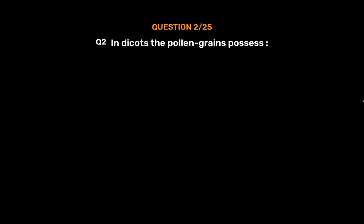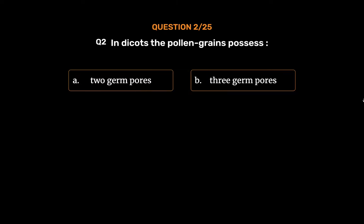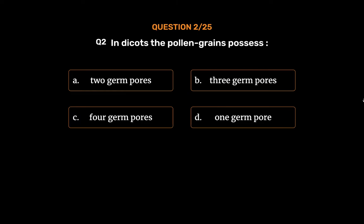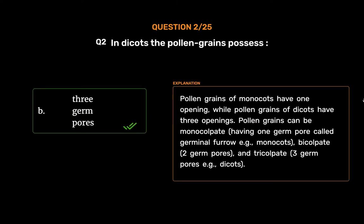Question No. 2. In dicots, the pollen grains possess: Option A. 2 germ pores. Option B. 3 germ pores. Option C. 4 germ pores. Option D. 1 germ pore. The correct answer is Option B, 3 germ pores. Pollen grains of monocots have one opening, while pollen grains of dicots have three openings. Pollen grains can be monocolpate (one germ pore), bicolpate (two germ pores), and tricolpate (three germ pores), for example, dicots.